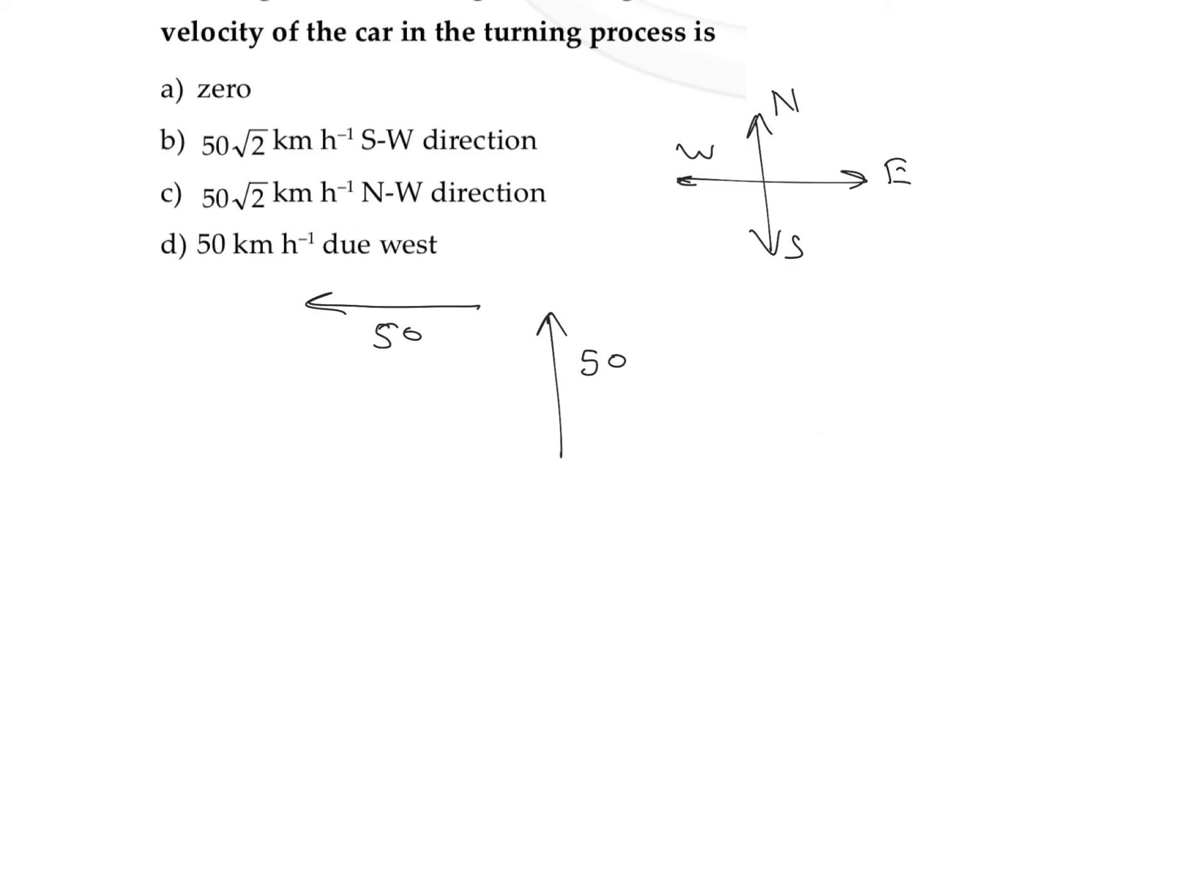So our aim is to find out the value of change in velocity. If you want to find out the value of change in velocity, it is final velocity vector minus initial velocity vector. So we can just take this final velocity as it is. Our aim is to find out this velocity vector minus the initial velocity vector which is 50 over here.